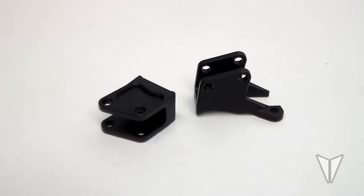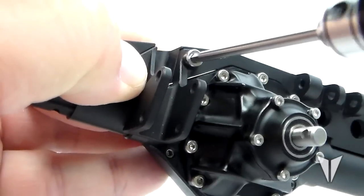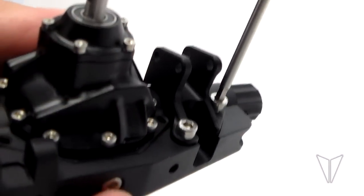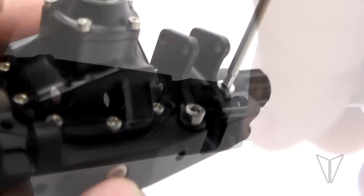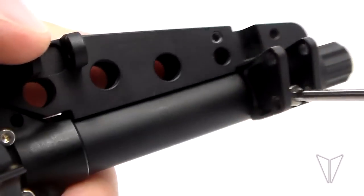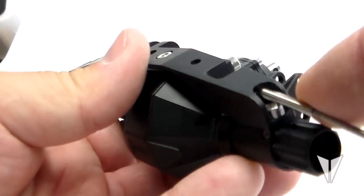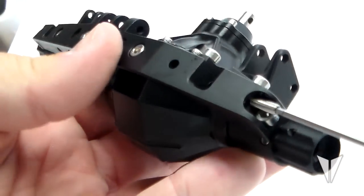Now we can move on to the lower suspension mounts. Mount these to the axle using the M3 by eight millimeter socket head hardware, and we can finish up assembly by installing the M3 by twenty millimeter grub screws and the sway bar mounts on the axle truss.